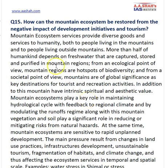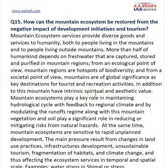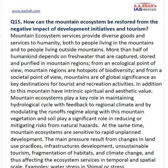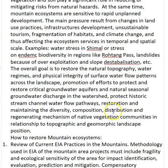The next question asks: how can the mountain ecosystem be protected from the negative impact of development initiatives? You should introduce the stresses placed on mountain ecosystems — building industries, railways, roadways, new highways, and tunnels, which are weakening mountain ecosystems. Pollution and excessive tourism are also causing issues. Examples include water stress in Shimla, the effect on biodiversity at Rohtang Pass, and destabilization from hydropower projects affecting the fragile and pristine mountain ecosystems.